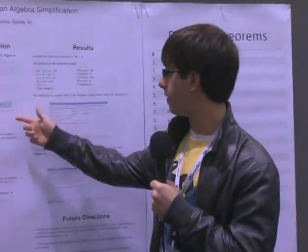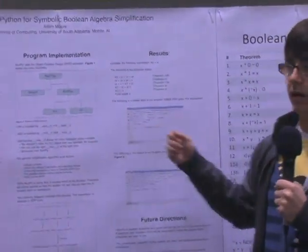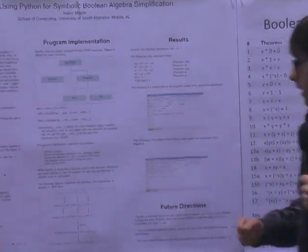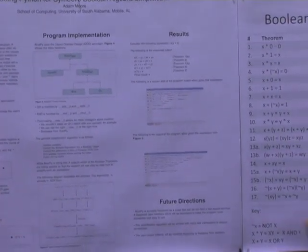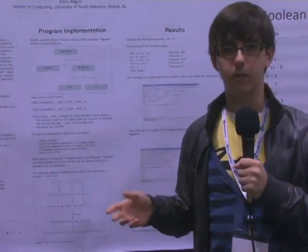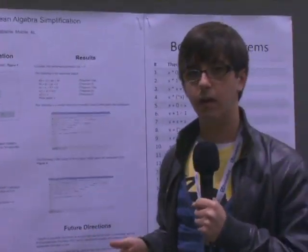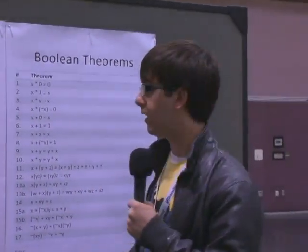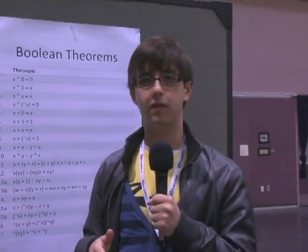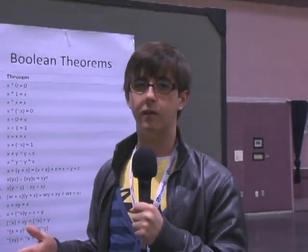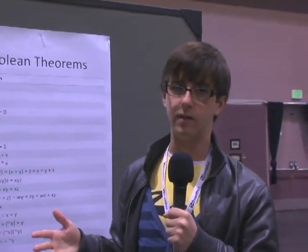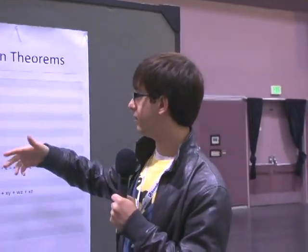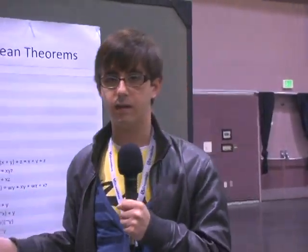So we overload the add, radd, mul, and rmul methods for these objects. We also overloaded new, which is an idea taken from SymPy, which is already a really good module for symbolic mathematics. This allows us to more intelligently create new objects once the simplification has happened — so you wouldn't want to have an or object with just one operand, that wouldn't make any sense.